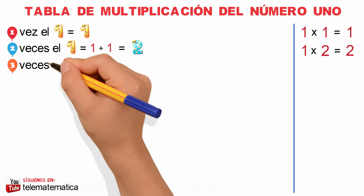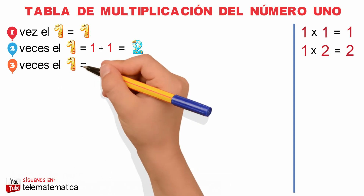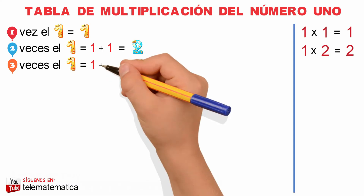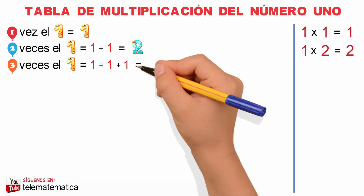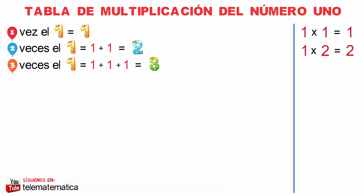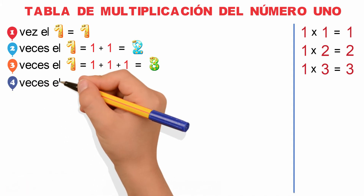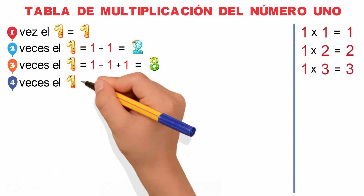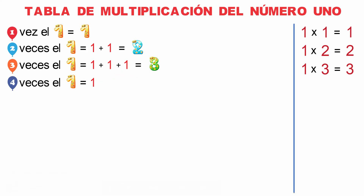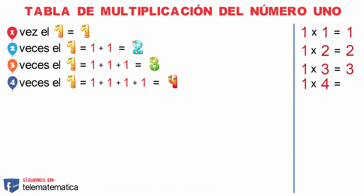3 veces el 1 es igual a 1 más 1 más 1 es igual a 3. Y escrito como una multiplicación sería 1 por 3 es igual a 3. 4 veces el 1 es igual a 1 más 1 más 1 más 1 es igual a 4. Y escrito como una multiplicación sería 1 por 4 es igual a 4.